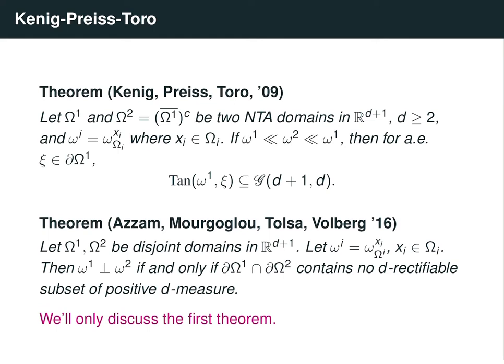In this video, we'll only focus on sketching the ideas behind the first results of Kenig, Preiss, and Toro. The second result is quite technical and requires some more black-box results from harmonic analysis, but it uses the same main ideas from the first result as a basis for the proof.